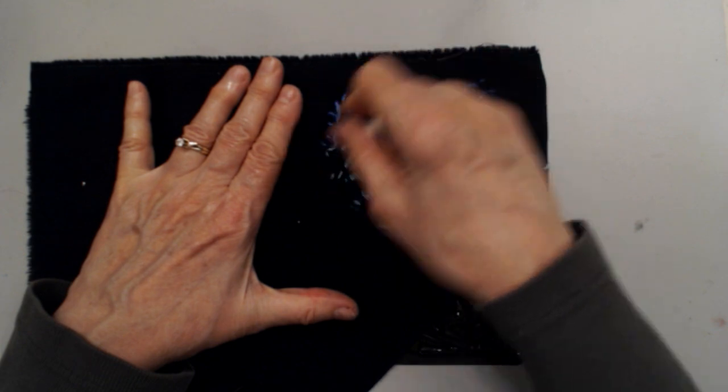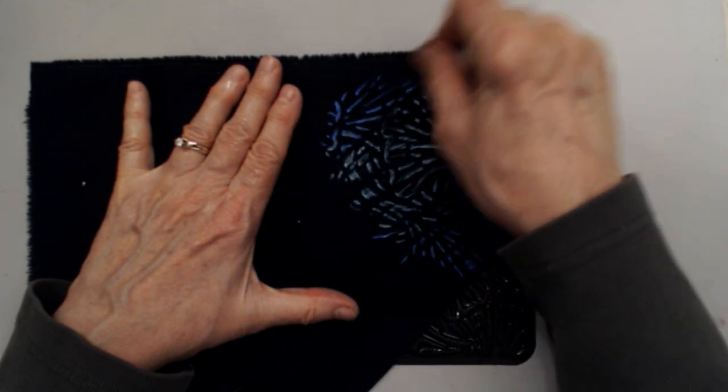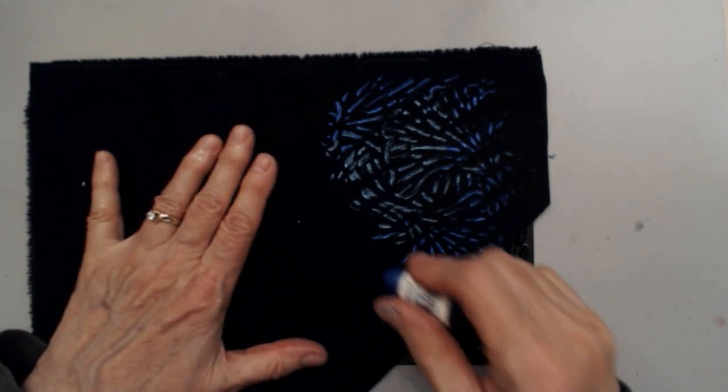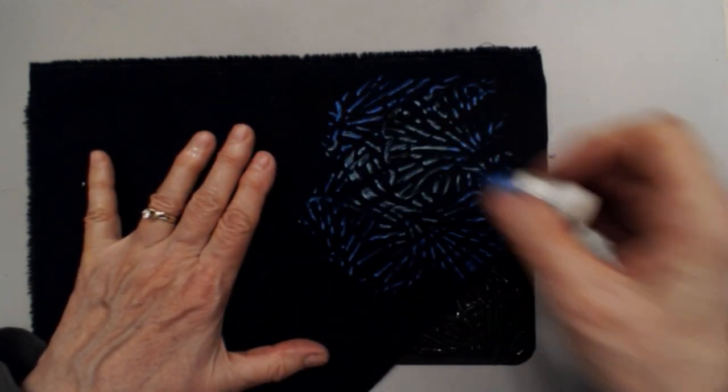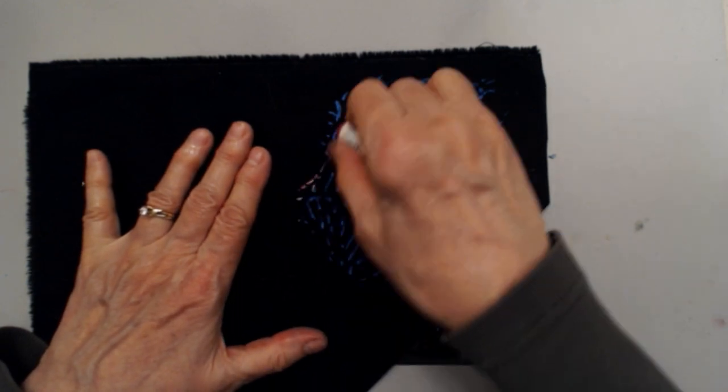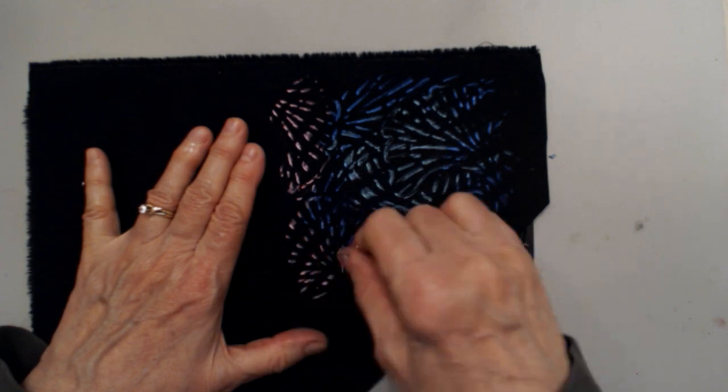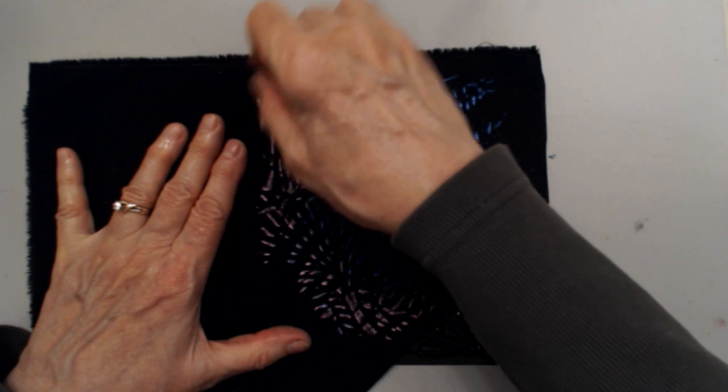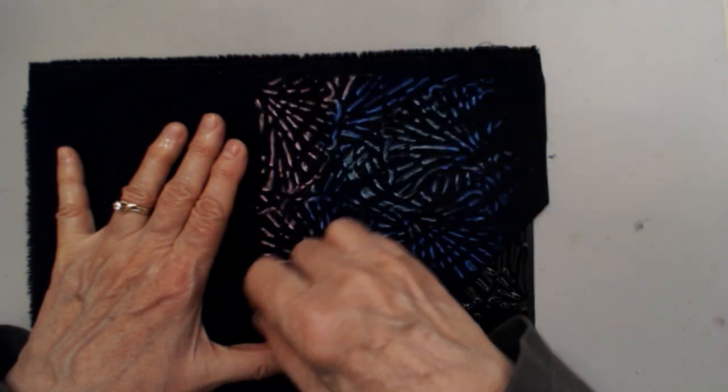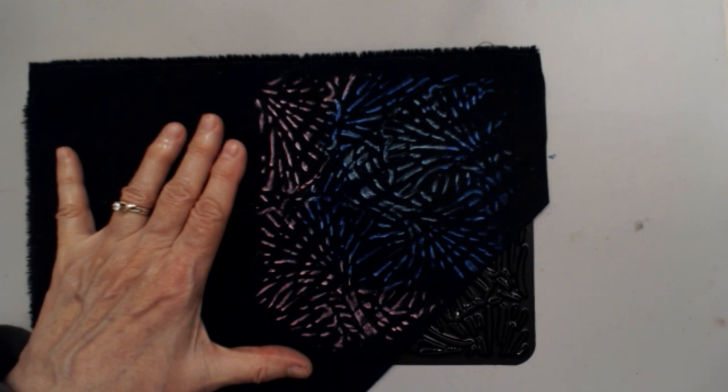And if you just hold on to the fabric here and just stroke, I mean, I'm barely stroking the paint stick over the surface, and you can see how beautifully the paint stick comes off in the fabric using the rubbing plate underneath for the design.